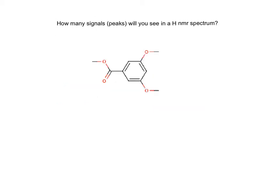More practice: how many peaks will you see in a proton NMR spectrum of this compound? Stop the video and think about that. The answer is 4. The equivalent and non-equivalent protons are drawn in to help you answer this question.